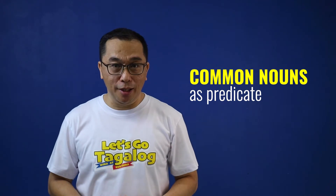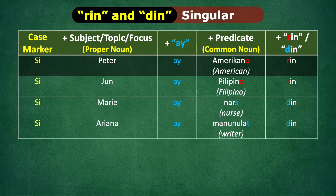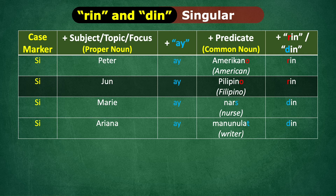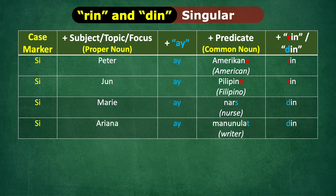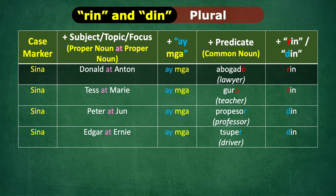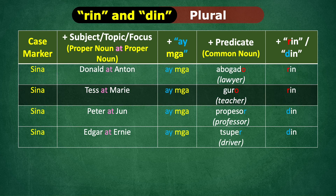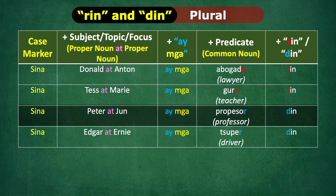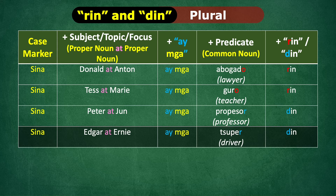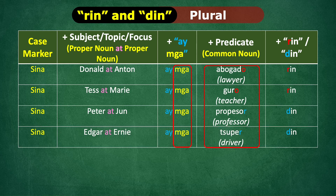Now, let us try using common nouns as predicate. Si Peter ay Amerikano rin. Si June ay Pilipino rin. Si Marie ay Nars din. Si Ariana ay manunulat din. Let's do the plural form. Sina Donald at Anton ay mga abogado rin. Sina Tess at Marie ay mga guro rin. Sina Peter at June ay mga propesor rin. Sina Edgar at Ernie ay mga tsyuper din. Remember, I talked about ay mga in the last video — mga modifies the common noun as a predicate.